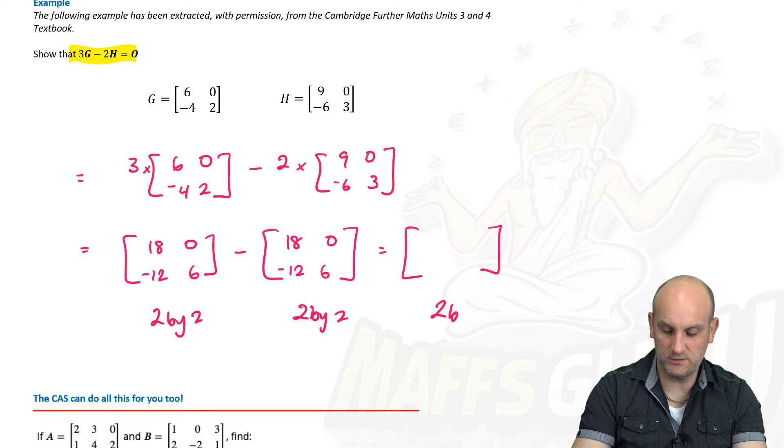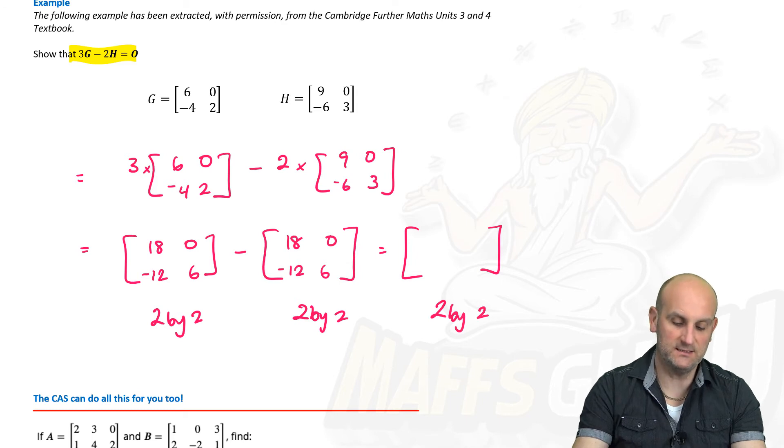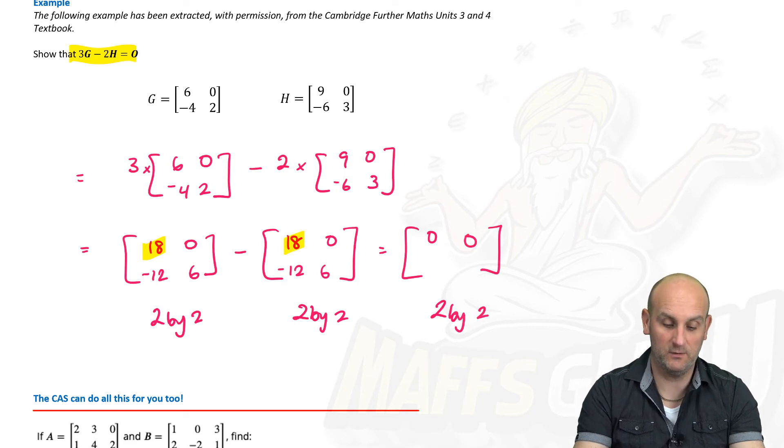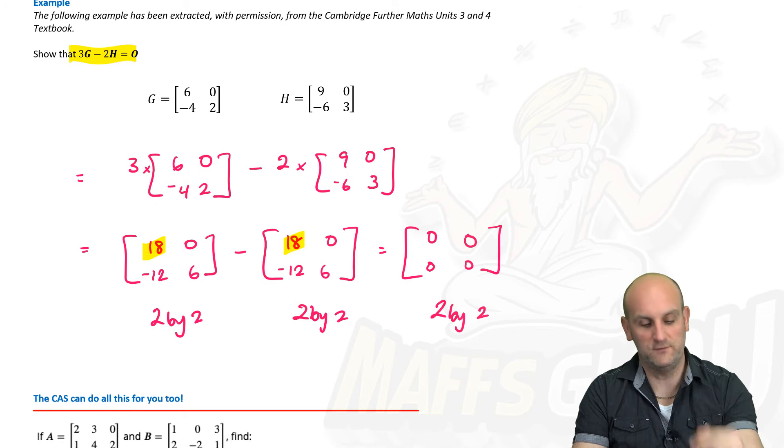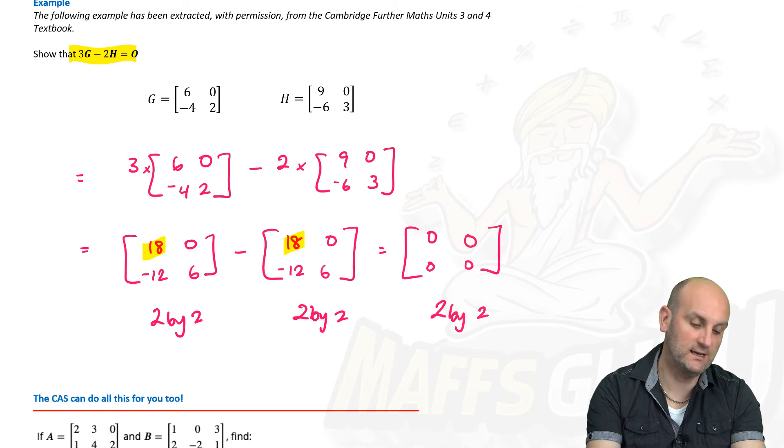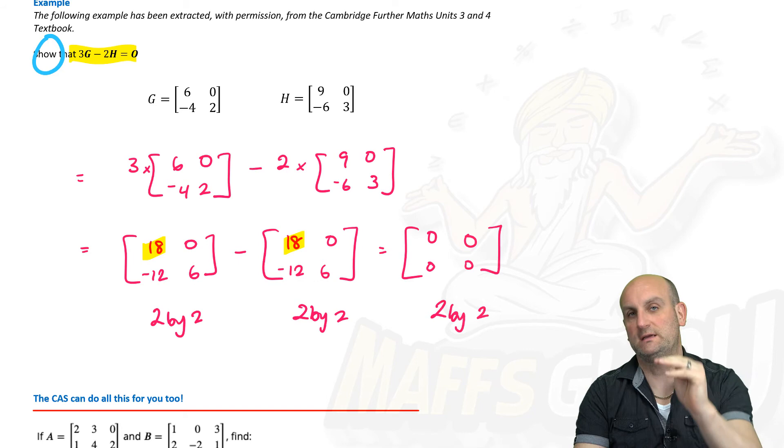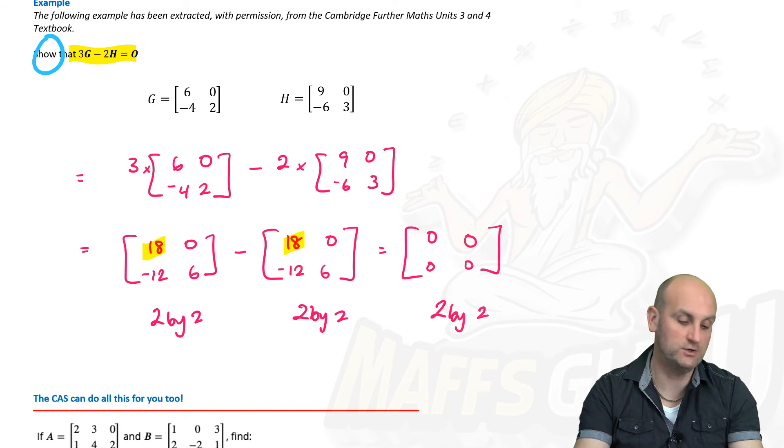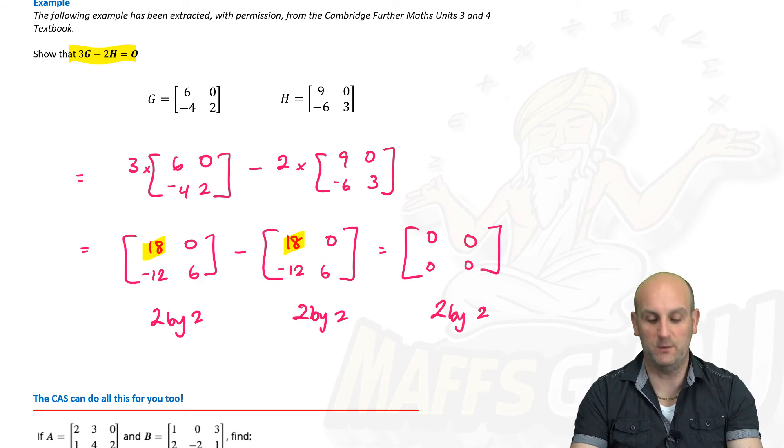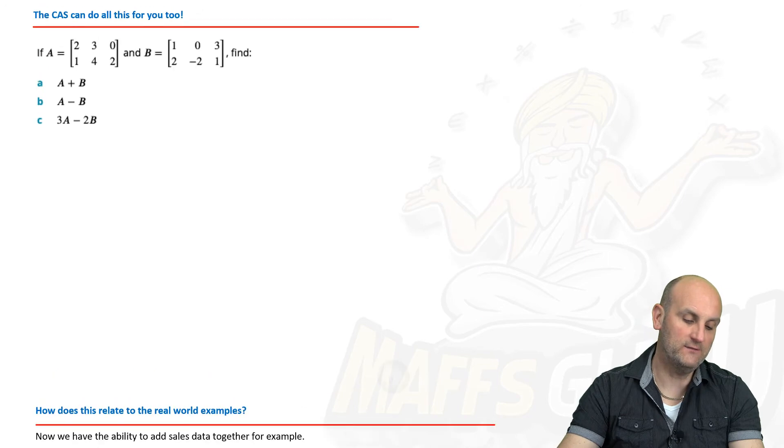And now, are they the same order? They are, because I've got a 2 by 2. That's a 2 by 2. My answer is going to be a 2 by 2. And so, 18 minus 18 is 0. Remember, all I'm doing now is the same elements take away from each other. 0 minus 0 is 0. Minus 12 minus minus 12 is minus 12 plus 12, which is 0. And 6 minus 6, oh, look at that. So, therefore, I've shown that. Now, when it says show that in an exam question, it actually wants you to show you're working out step by step by step. If you don't do the show, if you don't do your working out, you won't get any other marks.